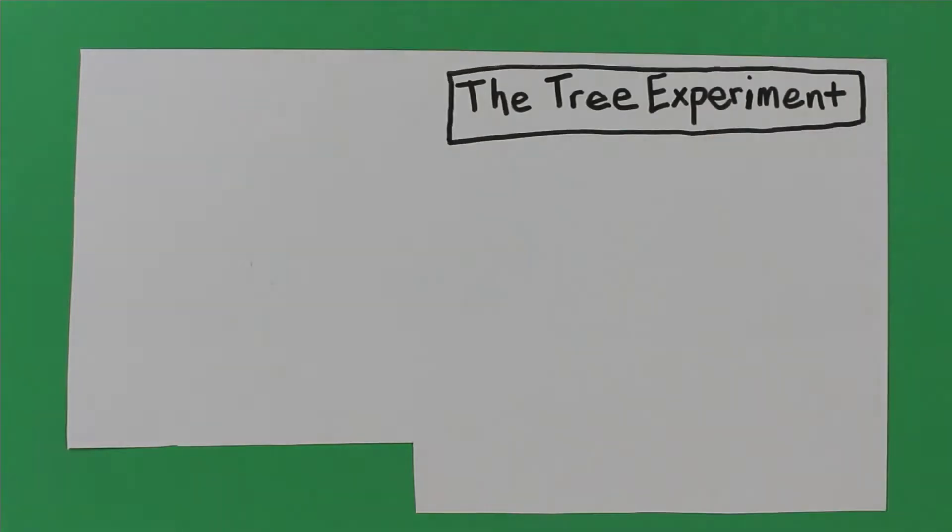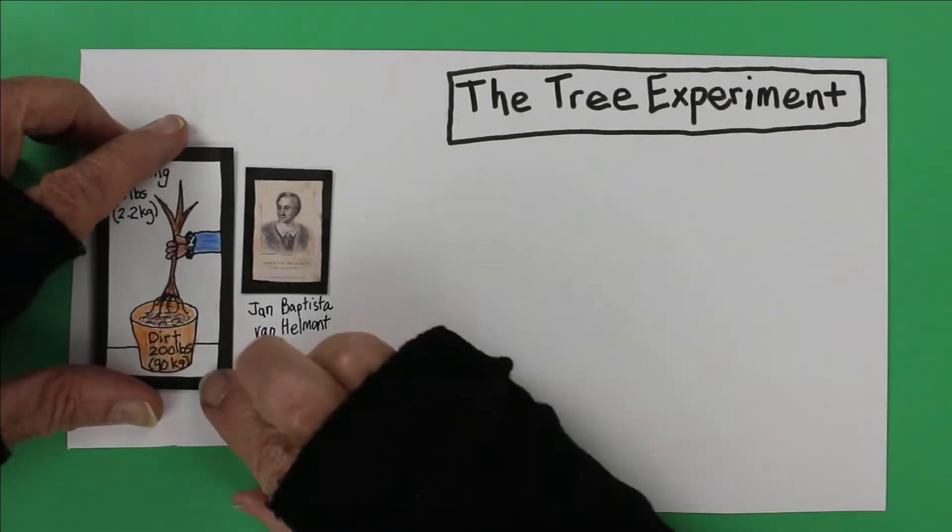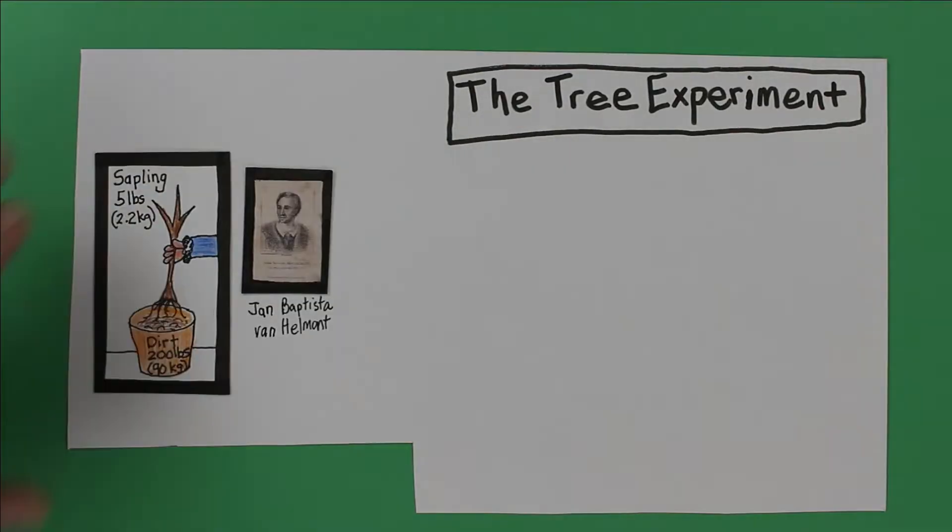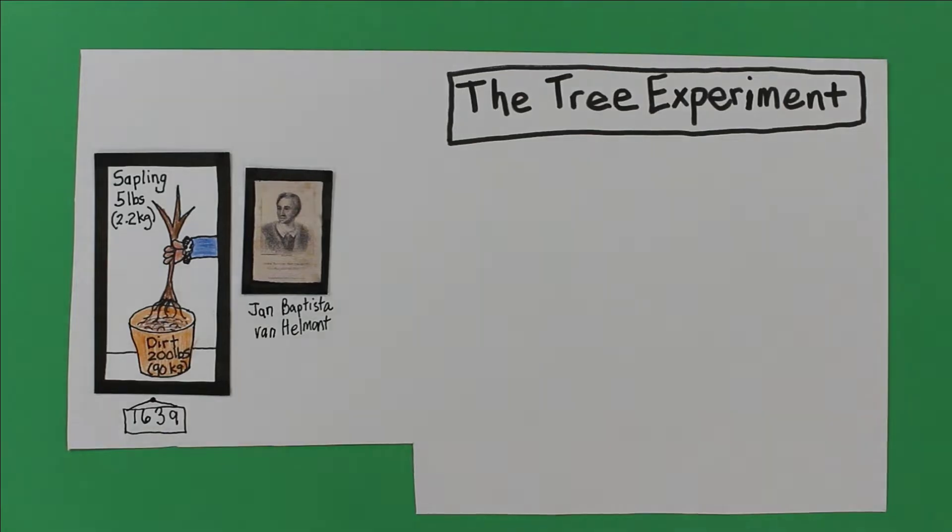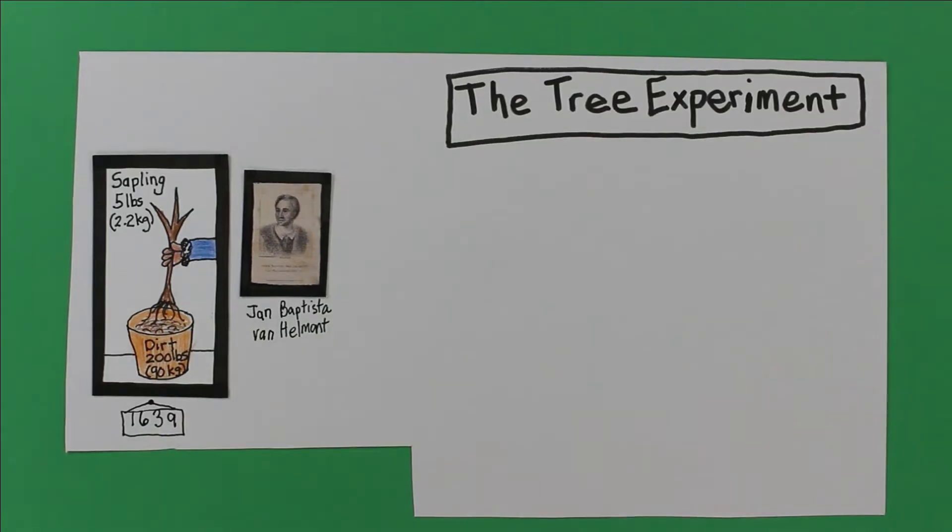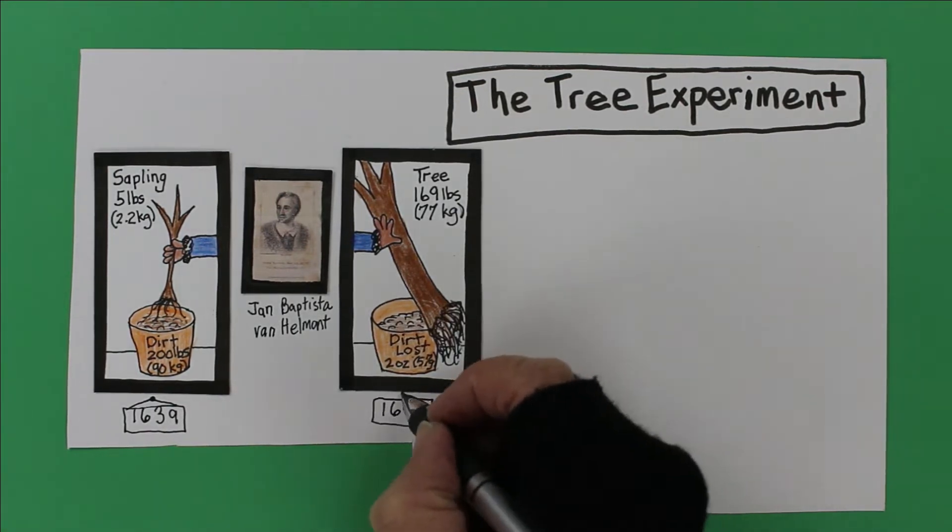That's what Jan Baptista van Helmont wondered in 1639. He weighed a willow sapling and then planted it in a pot of dry soil or dirt. The sapling weighed 5 pounds or 2.2 kilograms. The dry soil weighed 200 pounds or 90 kilograms. For five years, he added only water to the tree.